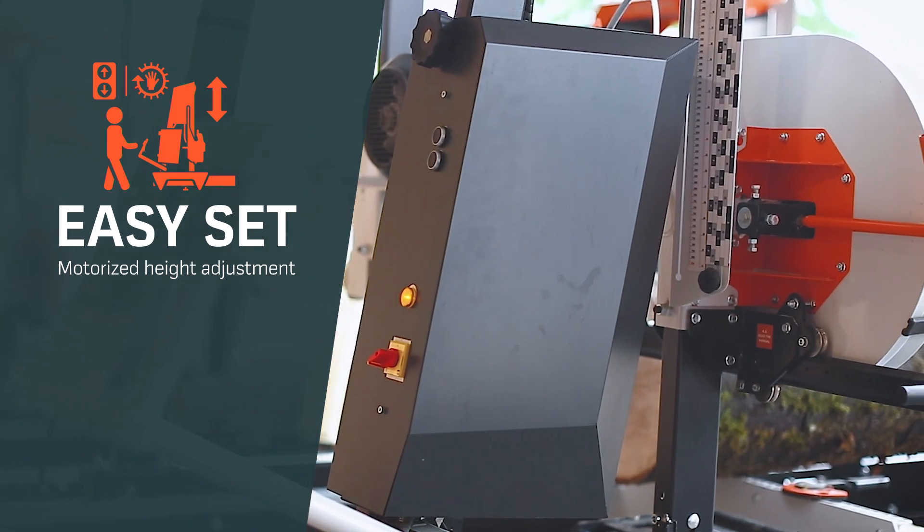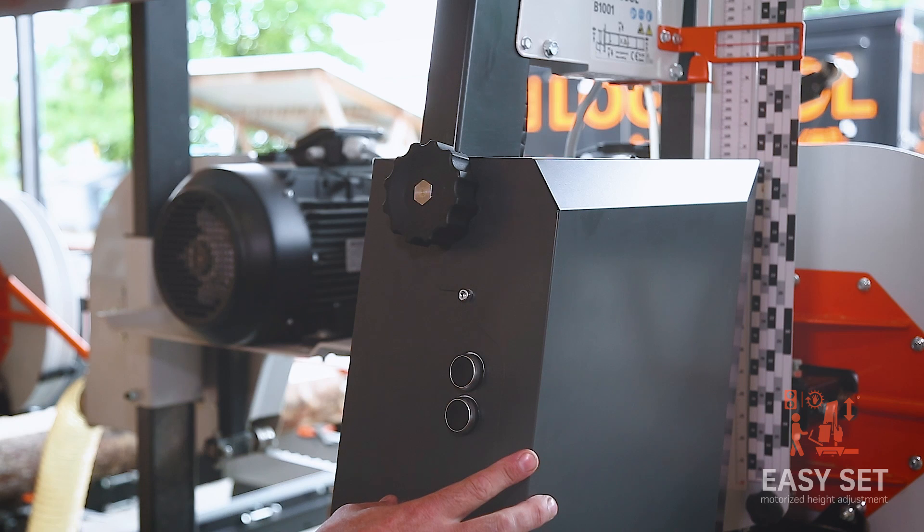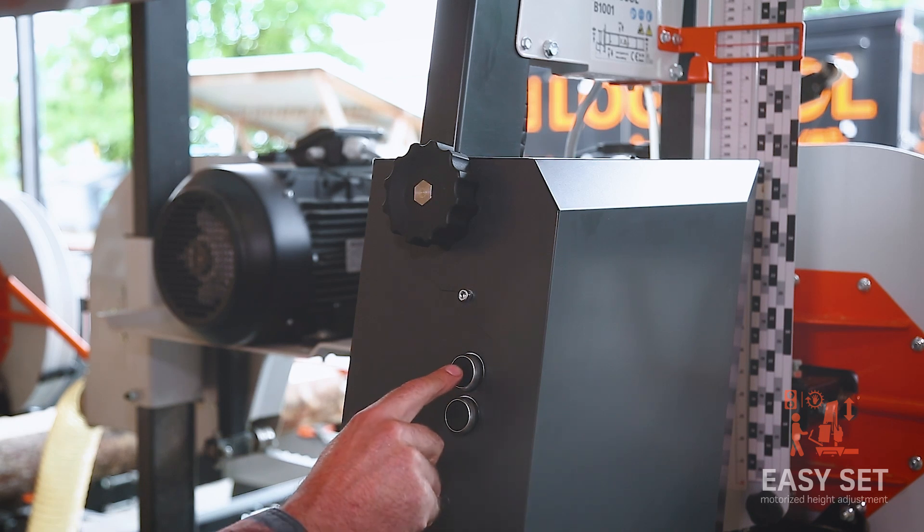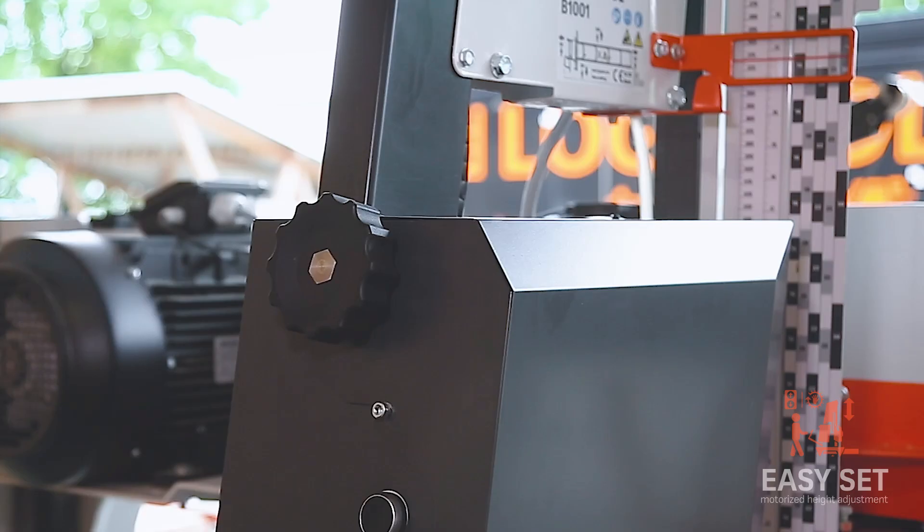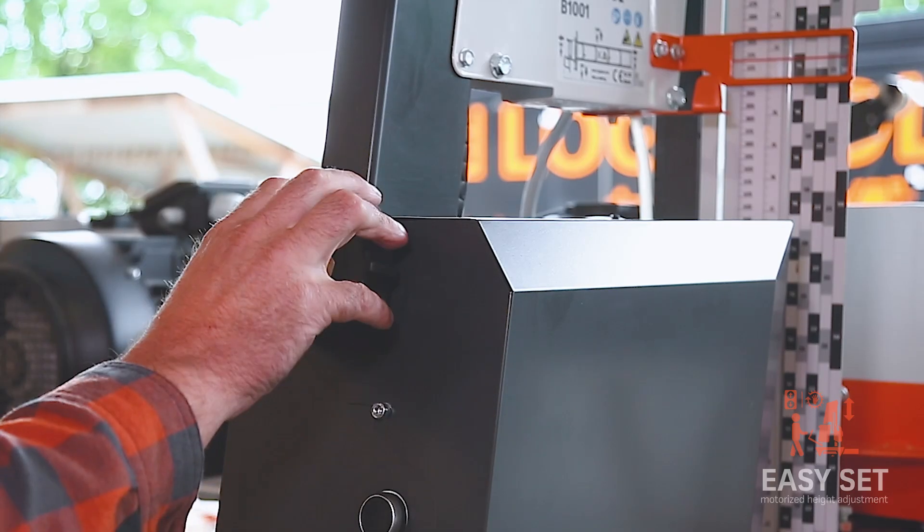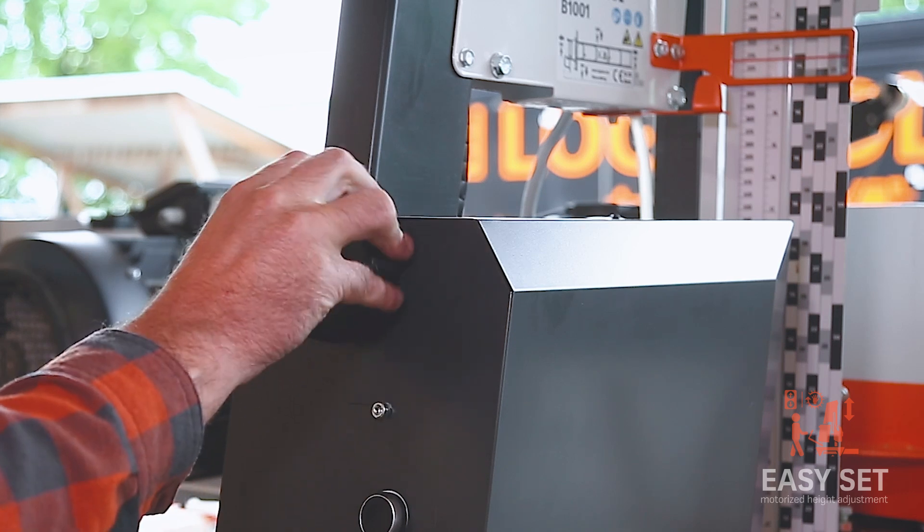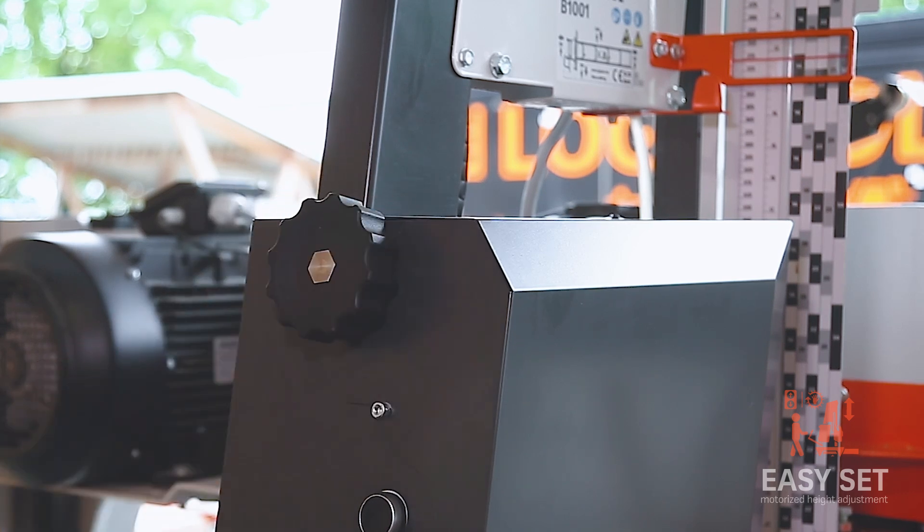This is our new motorized height adjustment for your Bandsomio. This enables you to raise and lower your saw head through these buttons, up and down. And the fine adjustment you do with this knob, exactly on the position that you want.